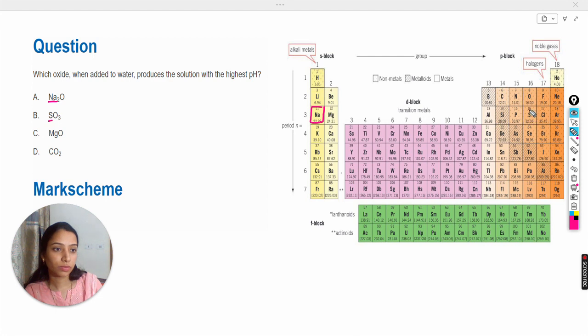Sodium is present here in the p block. Next is magnesium. Magnesium is an alkaline earth metal and belongs to s block. Next is carbon.